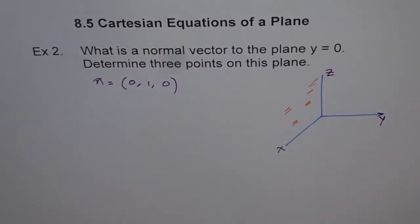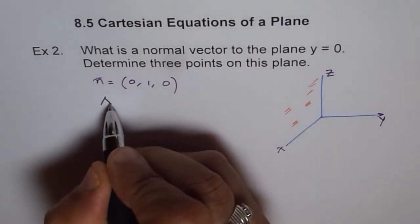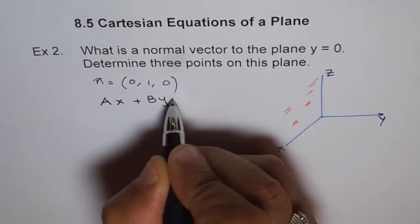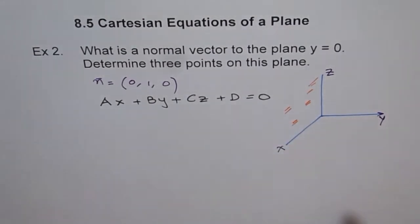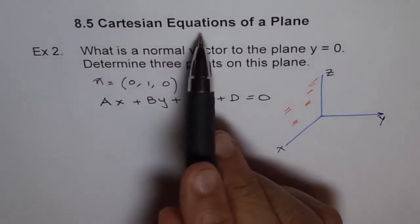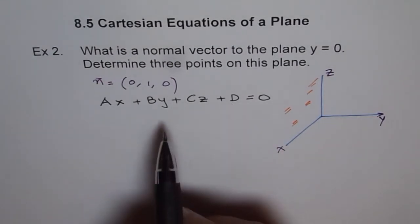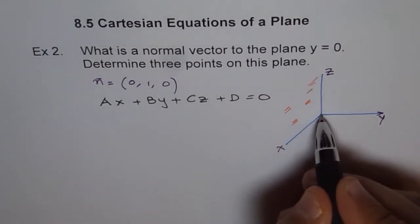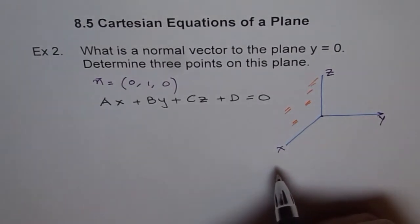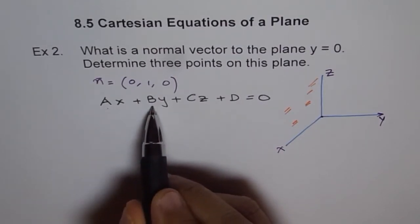Now when we are talking about Cartesian equations of a plane, then what do we understand? When we say Cartesian equation of a plane, the equation which comes to our mind is Ax plus By plus Cz plus D equals 0. That is the general Cartesian equation of a plane where A, B, C are the normals to this plane. And you can get point D by substituting any point on the plane.